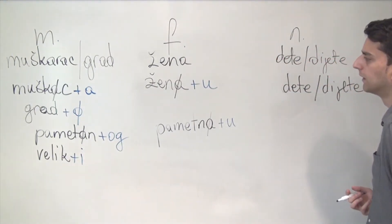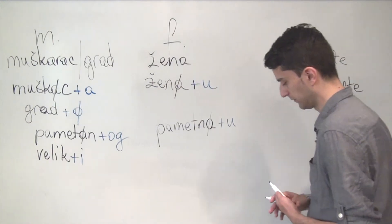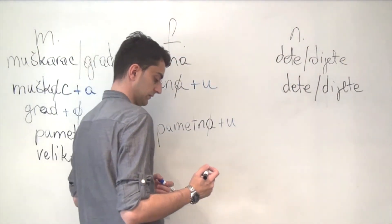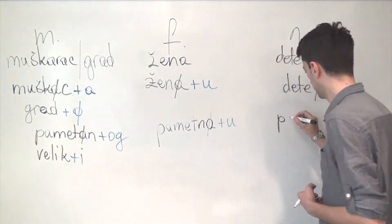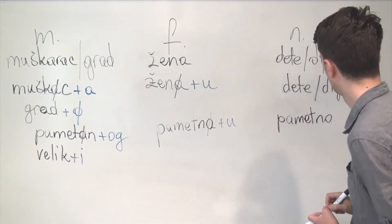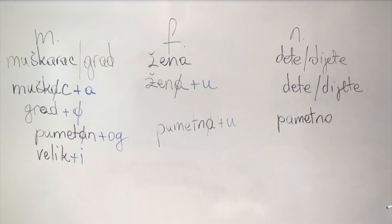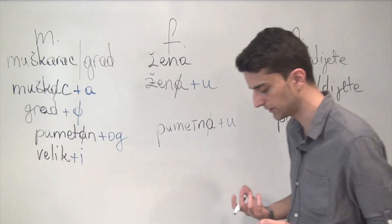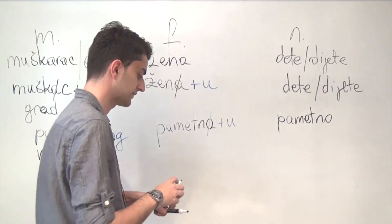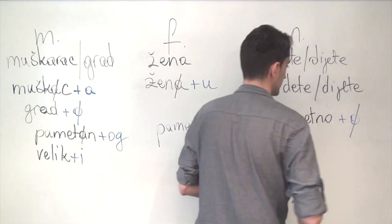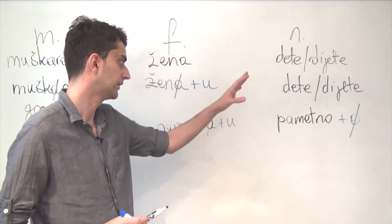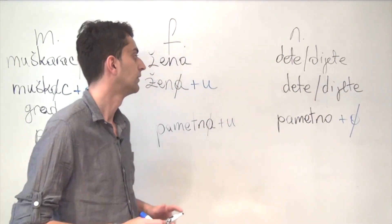And with neuter nouns, you have another specific situation where you take the adjective Pametno in nominative and nothing really changes. There is no change to the accusative in terms of suffixes, so it just stays the same. So there's no suffix. And what you get is Volim Pametno dete, I love the smart child, or a smart child.